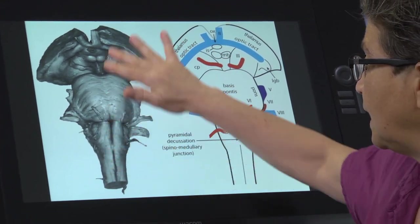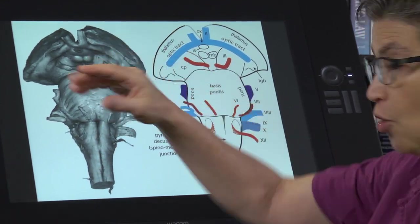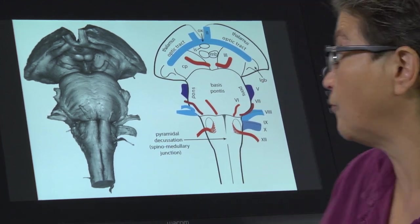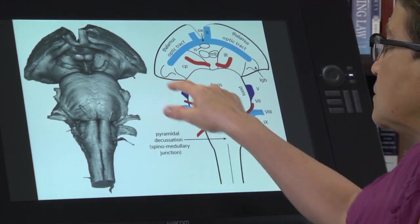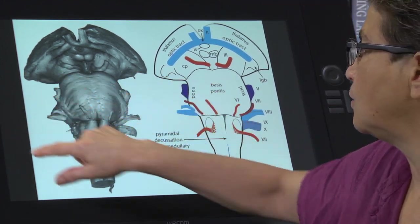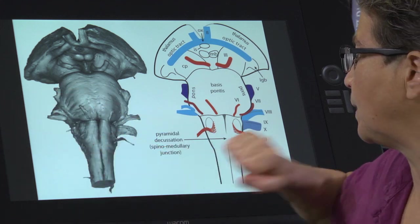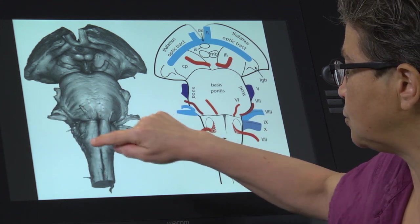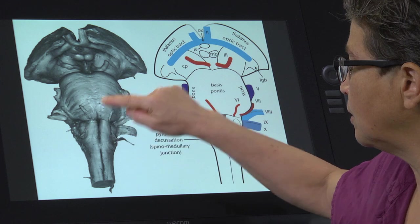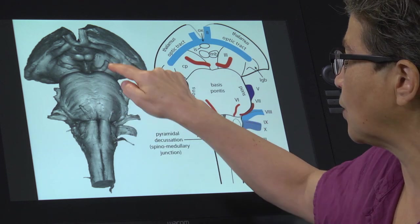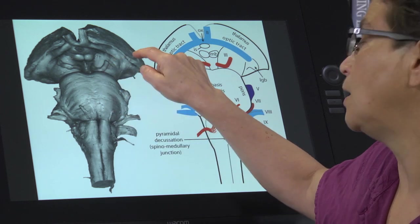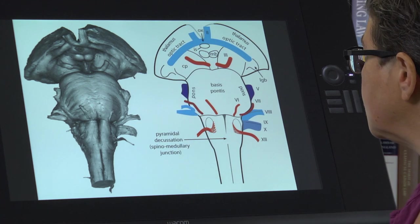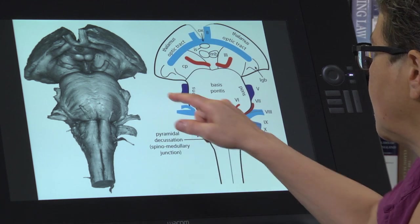This is an isolated brainstem. What's been cut off is the cerebrum — the whole forebrain has been cut off. The other thing that's been cut off, which we'll look at in a minute, is the cerebellum. So all we're looking at is medulla, which is right here, pons, and midbrain. And actually there's thalamus, but we're not going to talk too much about thalamus.